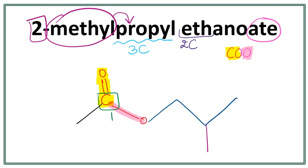Since we are drawing a line structure, we don't really need to draw out this carbon here. So let's get rid of this carbon and the number. So this is the structure for 2-methylpropyl ethanoate.